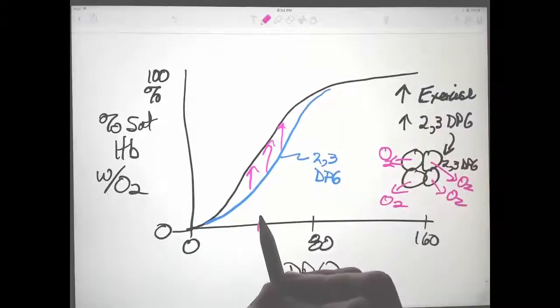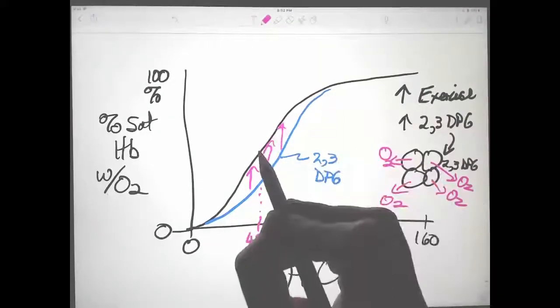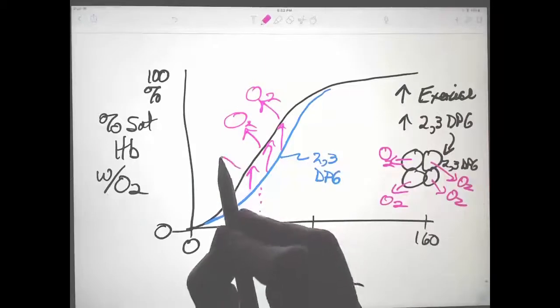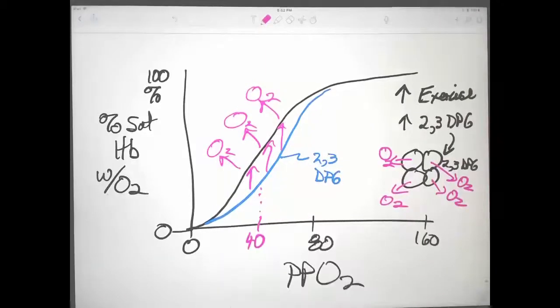At any given partial pressure of oxygen, more oxygen is released. This is a mechanism to increase oxygen release through the whole body by increasing 2,3-DPG.